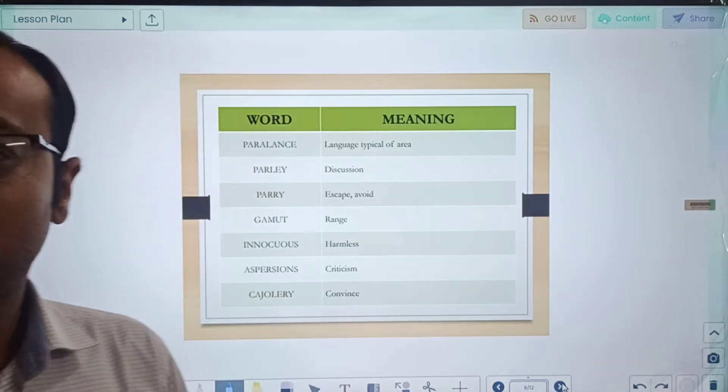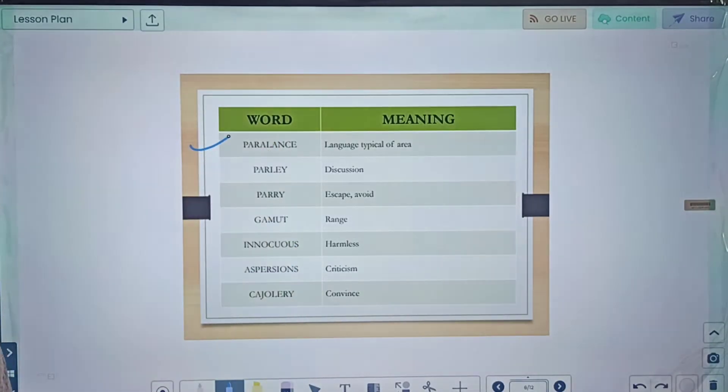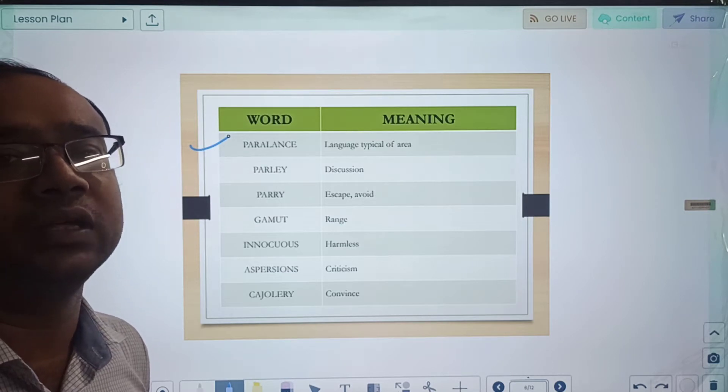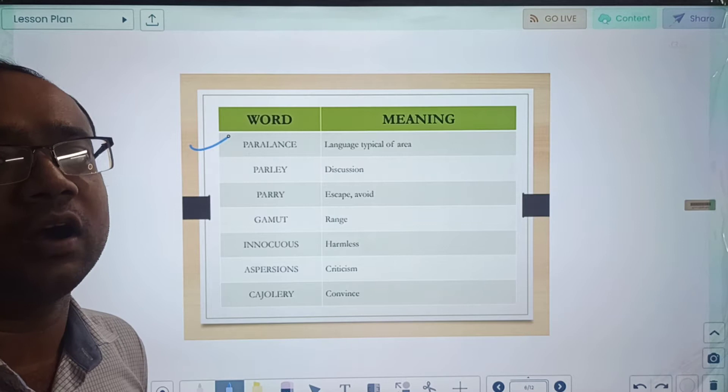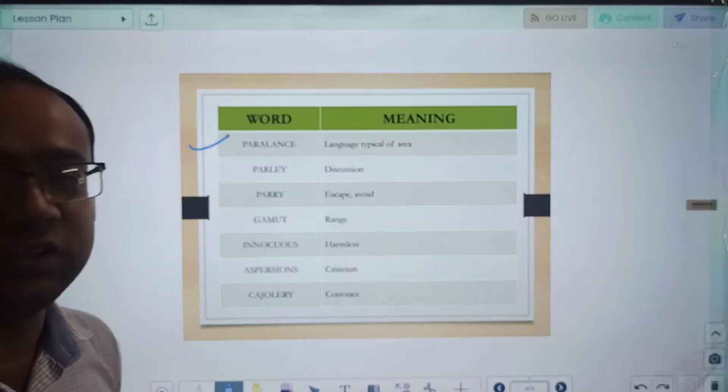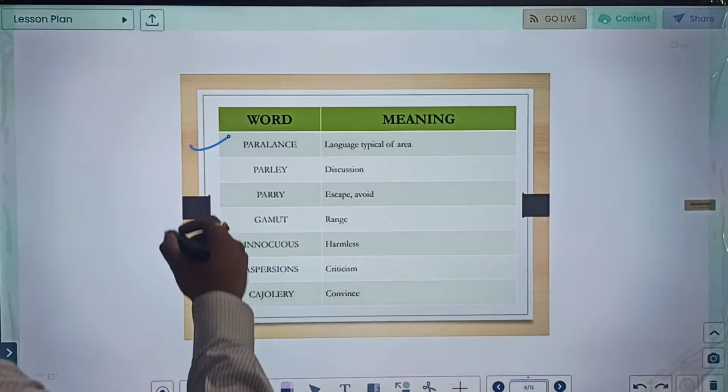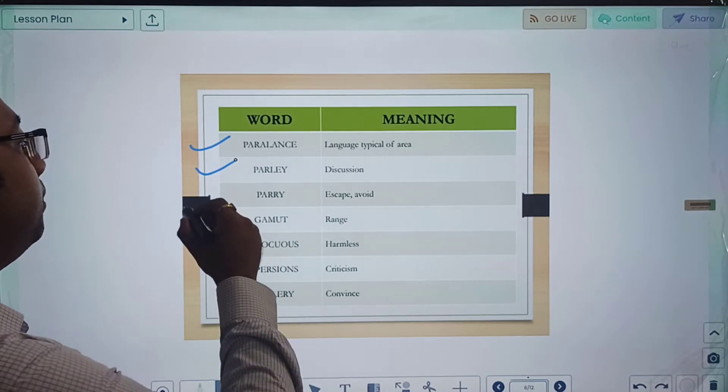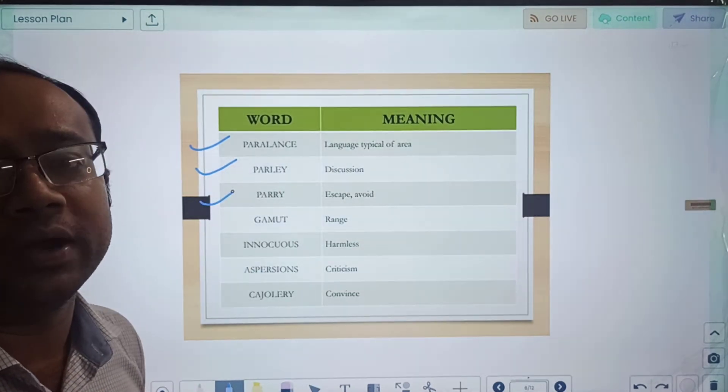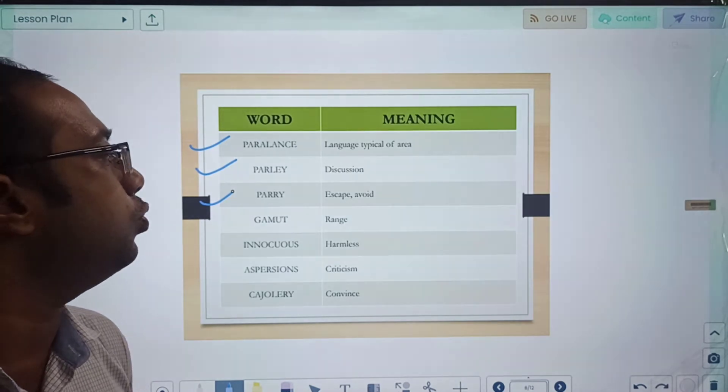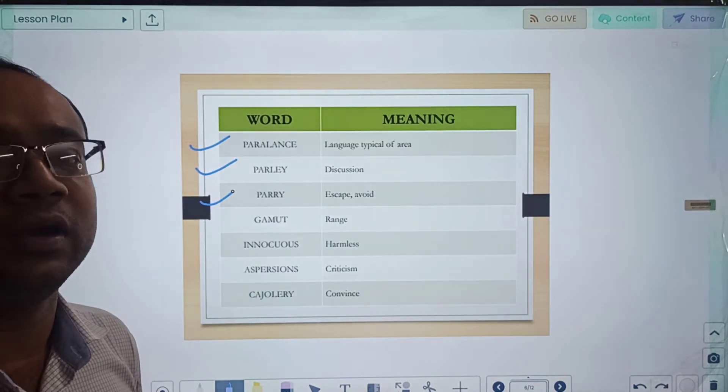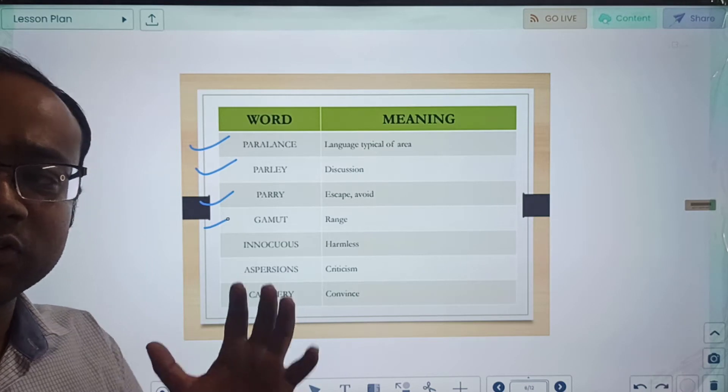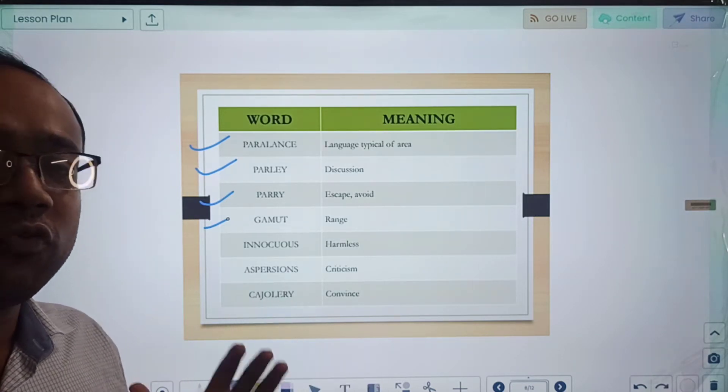Let us begin. Our first word for today is parlance. Parlance basically means language typical of an area. Whenever we are going to a new place or doing study related to demography, studying the language is utmost important. Next word is parley, which means discussion. Parry means to escape or to avoid. Gamut means range. So when we are using this word gamut, we typically mean the entire range.